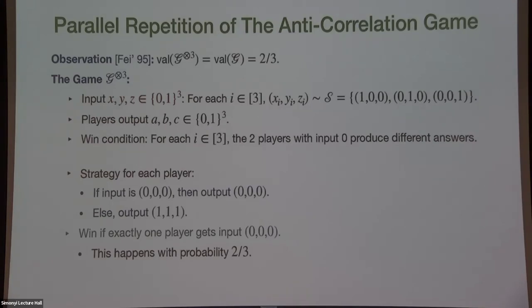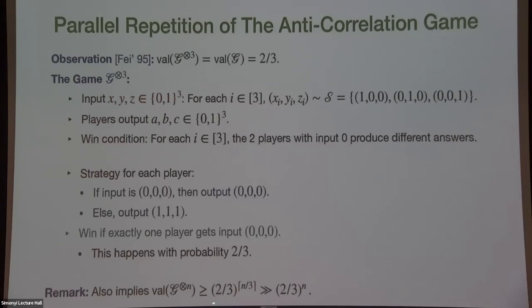That's essentially the argument people thought of for why parallel and sequential should match. But in the parallel case, as shown, the answer for the first coordinate can depend on the question for the third coordinate. Repeating the game n times gives value (2/3)^{n/3}, by dividing into groups of three and applying the strategy on each group. This already demonstrates the gap between value(G^n) and value(G)^n.